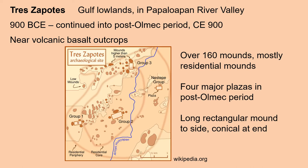Tres Zapotes, in the Gulf Lowlands, is the furthest west, occupied from 900 before the Common Era and continuing into the post-Olmec period around Common Era 900. It is located near the volcanic basalt outcrops that were used to make the giant stone heads. It has over 160 mounds, mostly residential mounds. Four major plazas were present by the post-Olmec period, and there was also a long rectangular mound with a conical end.